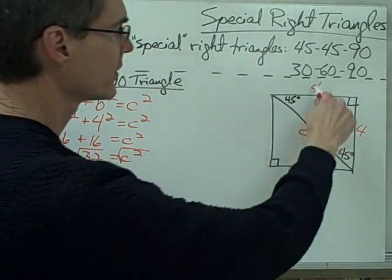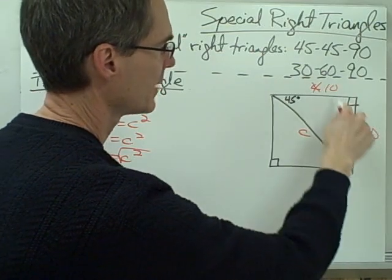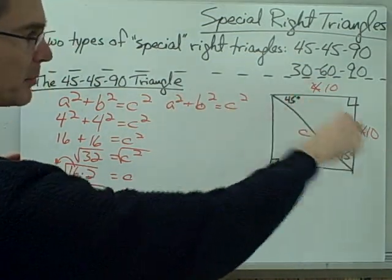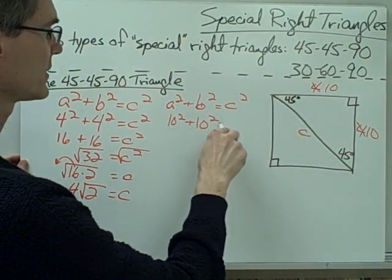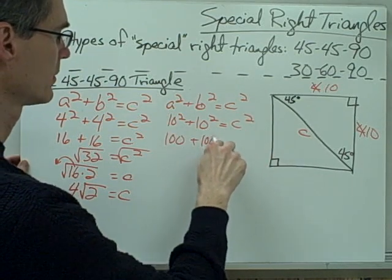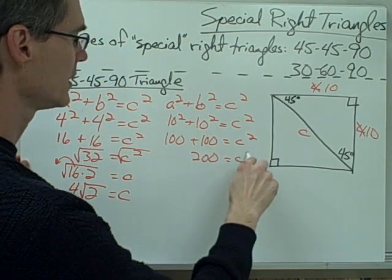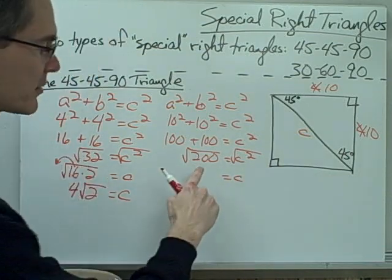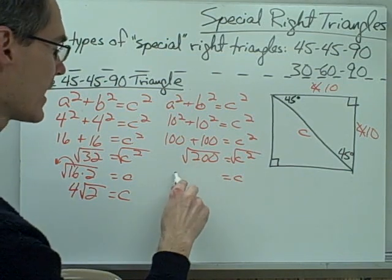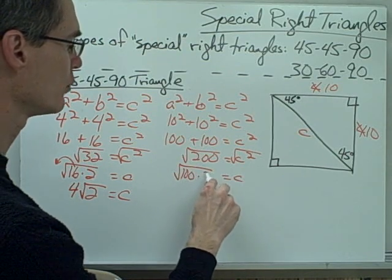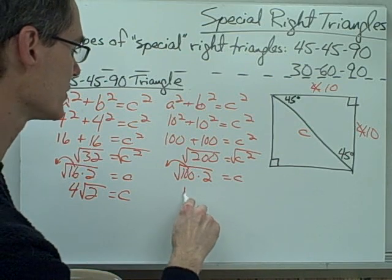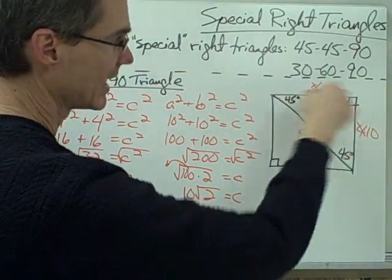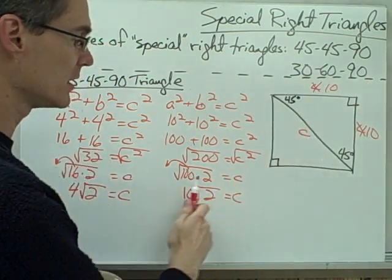Let's try this with a different size square — let's say the sides are now 10. Using the Pythagorean theorem: 10² + 10² = c², giving us 200 = c². Taking the square root, c = √200. Looking for a perfect square: 200 = 100 × 2, so I can take out √100, which is 10. That gives c = 10√2. So if the leg is 10, the hypotenuse is 10√2.